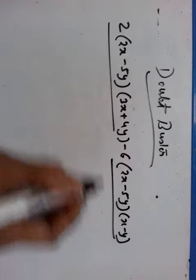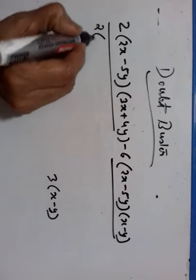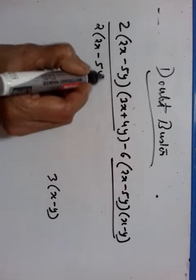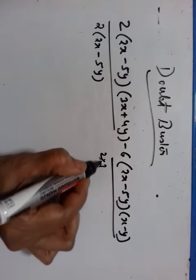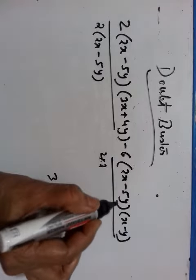Look here in these two terms, what is common? 2 into 2x minus 5y is common. Why? Here it is 2 into 3. 6 is equal to 2 into 3, right? 2 into 3 into 2x minus 5y.